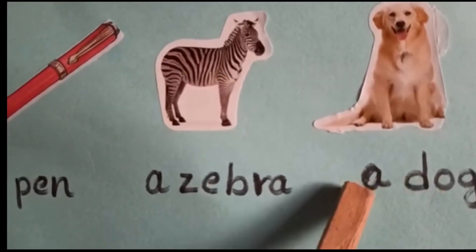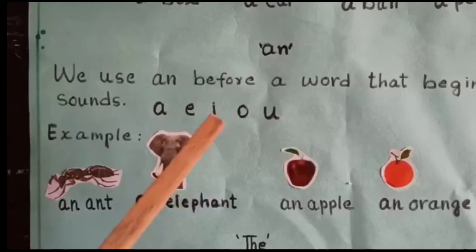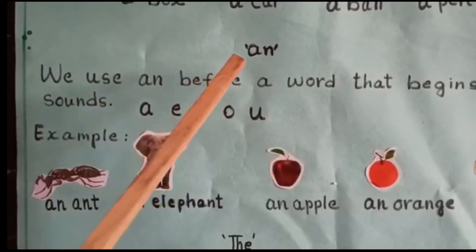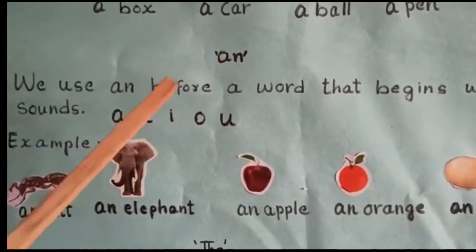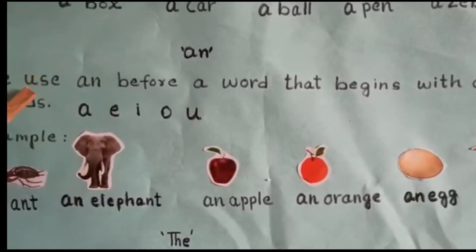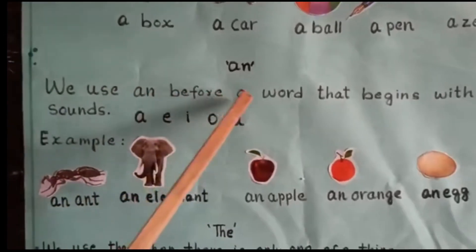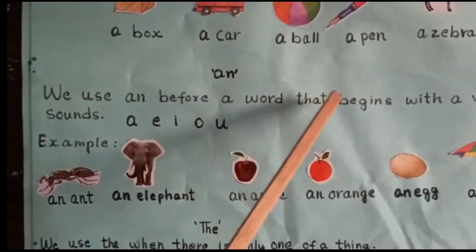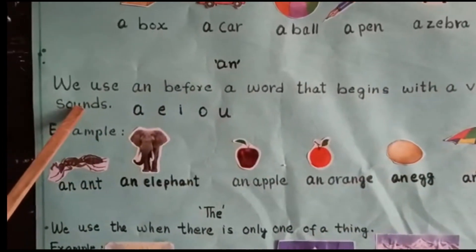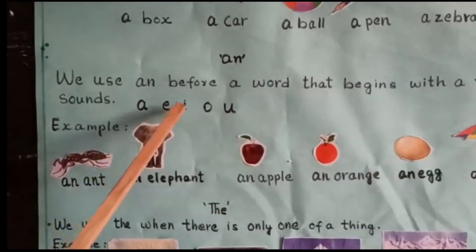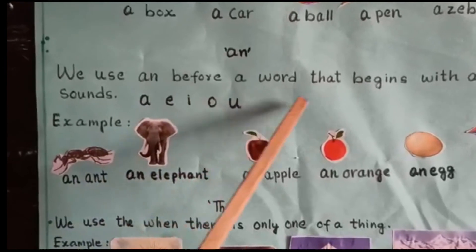Now, how to use an. We use an before a word that begins with a vowel sound. A, E, I, O, U are called vowels.